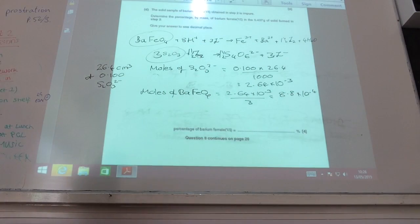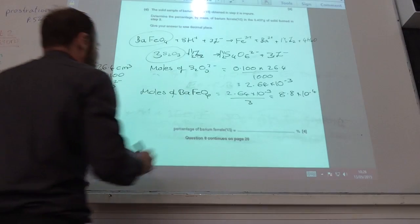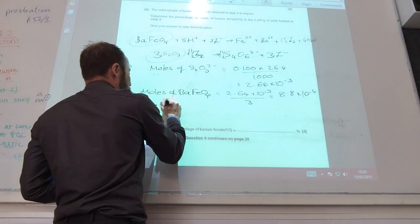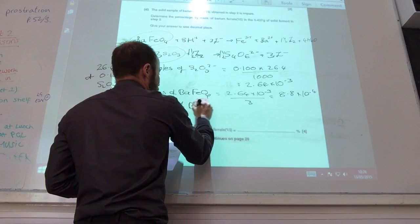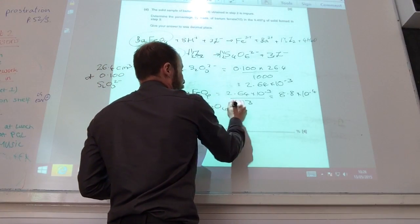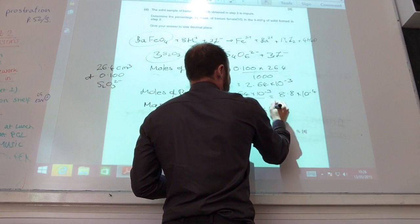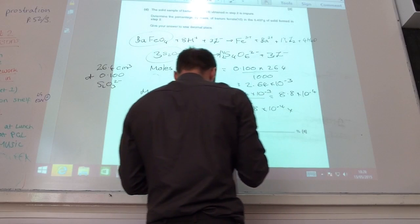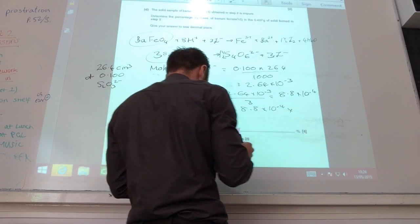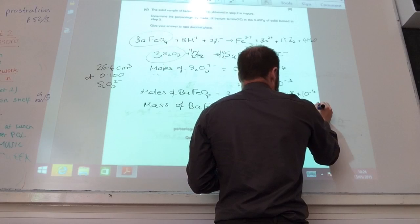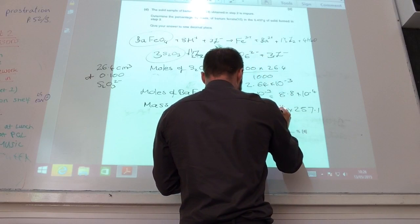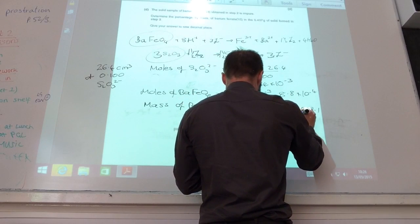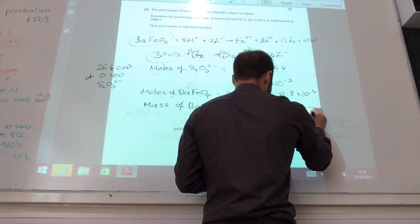I've got moles. What can I do? I need to find out the mass. So if I work out the molar mass, it's going to be 8.8 times 10 to the minus four times the molar mass is 257.1. So that actually comes to 0.226 grams.